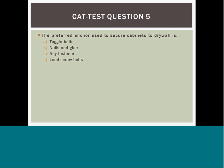Question 5: The fastener used to attach cabinets to drywall is A) toggle bolts, B) screws and glue, C) any fastener, or D) install into studs or use backing. Answer D is the best answer. In a healthcare environment, best practice is to install cabinets directly into studs or use backing. Answer A does not provide adequate capacity for weight load. Answer C could include a fastener that is not adequate for the weight load. Answer B does not provide enough surface area for adequate weight-bearing capacity for the cabinets.